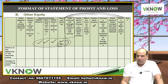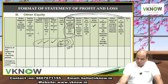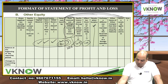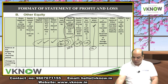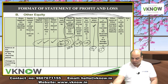The more complex items in Other Equity — debt instruments through OCI, equity instruments through OCI, effective portion of cash flow hedge — will be covered in Ind AS 109. Revaluation surplus is covered in Ind AS 16 (Property, Plant and Equipment). Exchange differences are covered in Ind AS 21. These appear rarely in questions.